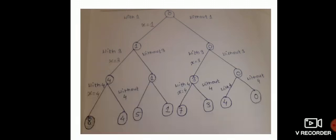Now the subset consists of with and without those two elements present in the set. With 3 we calculate 0 plus 3 equals 3, and without 3 you just copy 0. Also, with 4: 3 plus 4 equals 7, and without 4 you just copy 3 as it is.